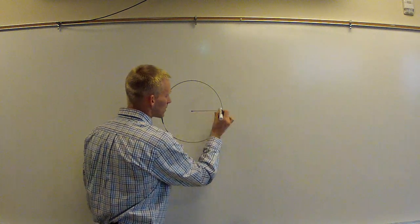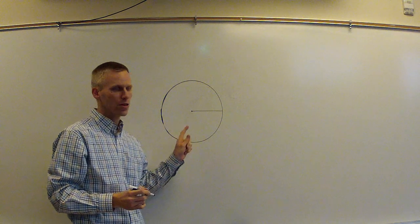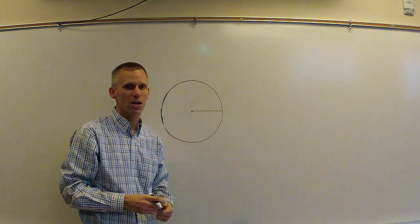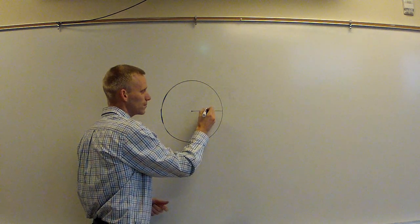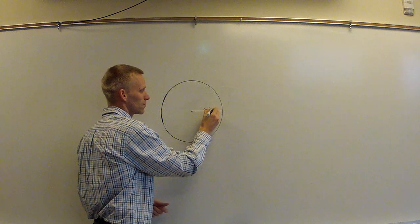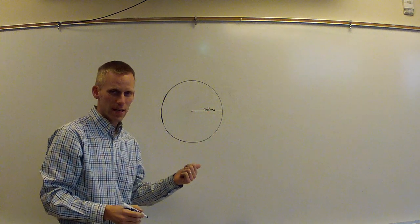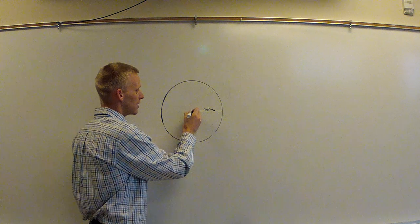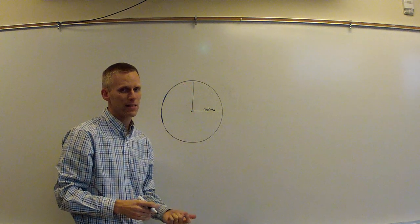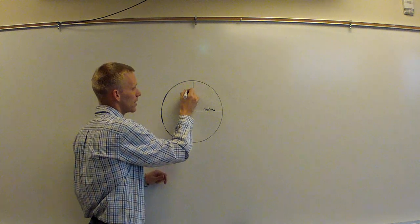We know that this distance from the center of the circle to one of its edges is called a radius. And if I would take that radius and extend it vertically, it would be the exact same length. That's again just the radius.